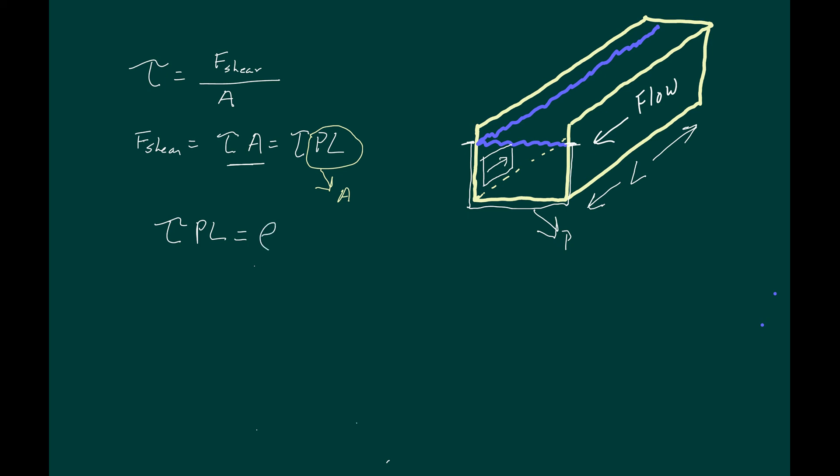Density times area times length times the acceleration of gravity times slope. So the left side of the equation is F sub shear and the right side is F sub net.